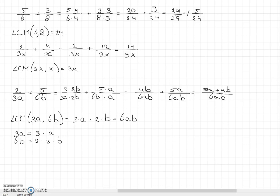In summary, when you want to add two fractions with a non-common denominator, you first have to find the least common multiplier of the two denominators, then make sure both fractions have that denominator, and then add them together. Check at the end whether you can simplify the fraction, and then you should be done.